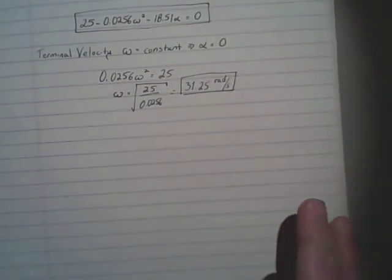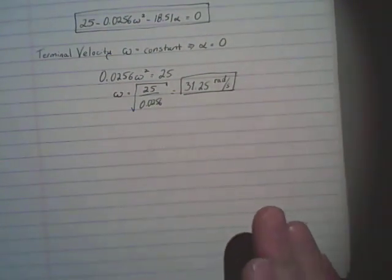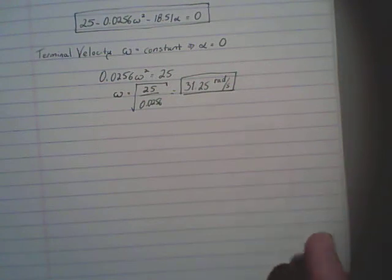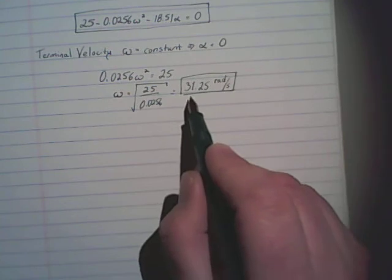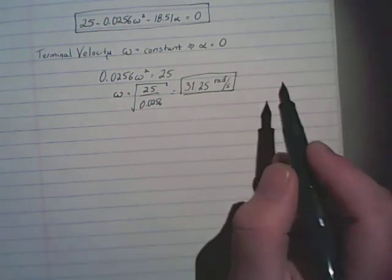The next part, or the final thing we are trying to find out here, is the angular acceleration and motor power at a speed of 20 radians per second. If you recall at the beginning, we said that 20 radians per second has to be less than the terminal velocity, or it doesn't make much sense.